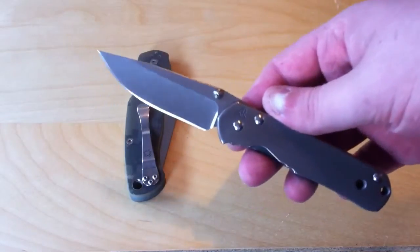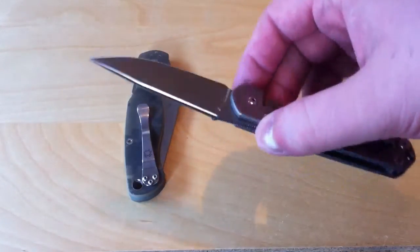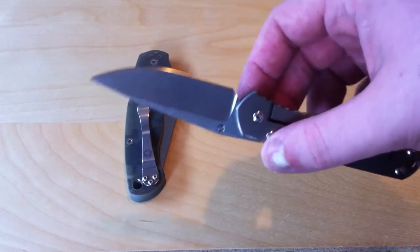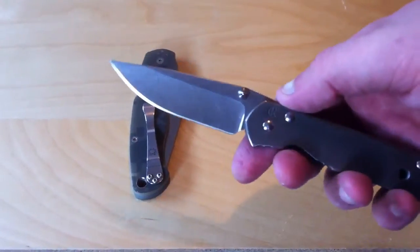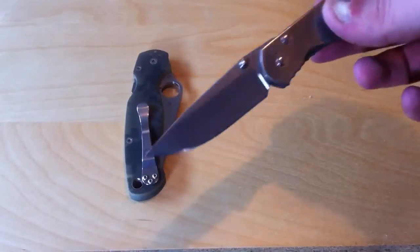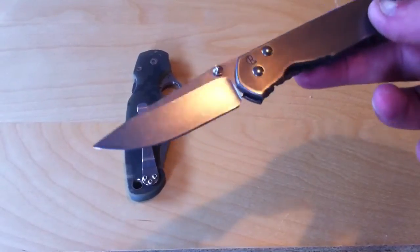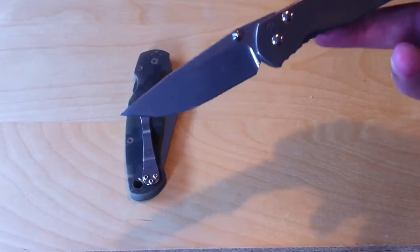So when you have something that's soft like this on the Sebenza, you don't have as much edge retention, but what you do get is toughness. And I think that's why Chris runs the steel a little bit on the softer side, simply because it makes for a tougher knife.